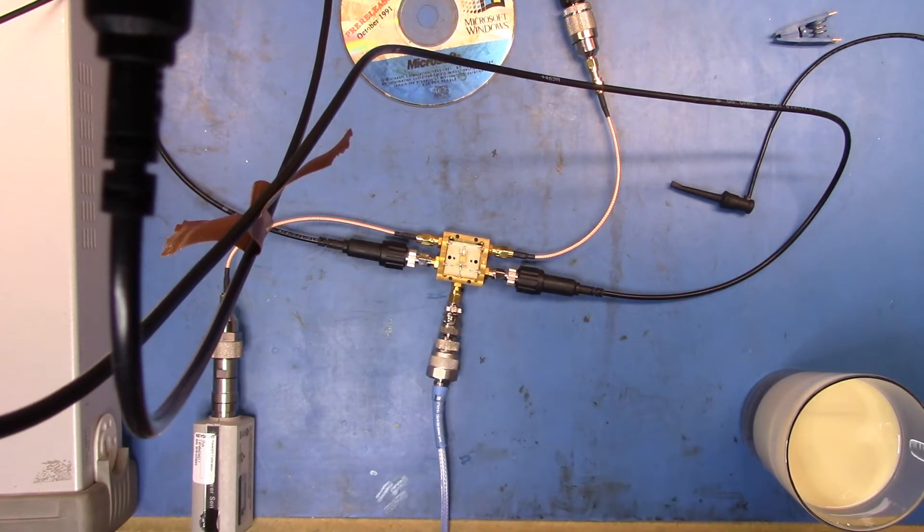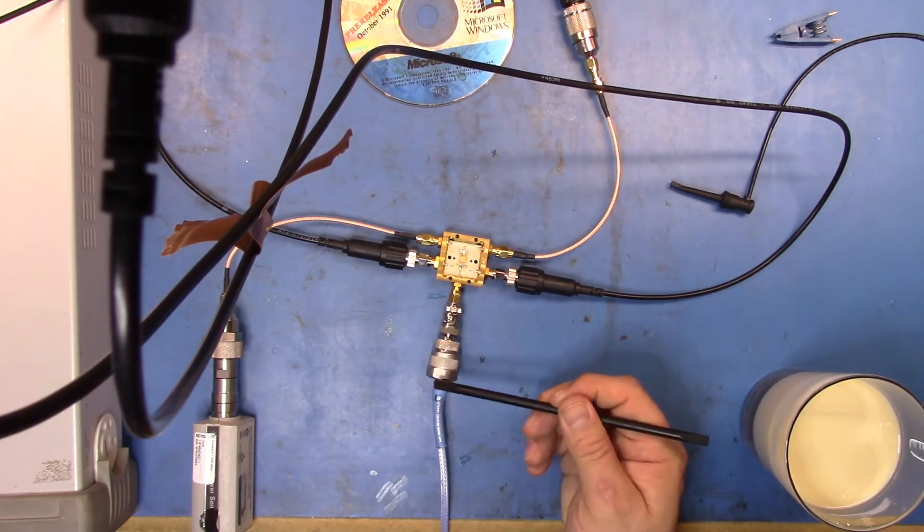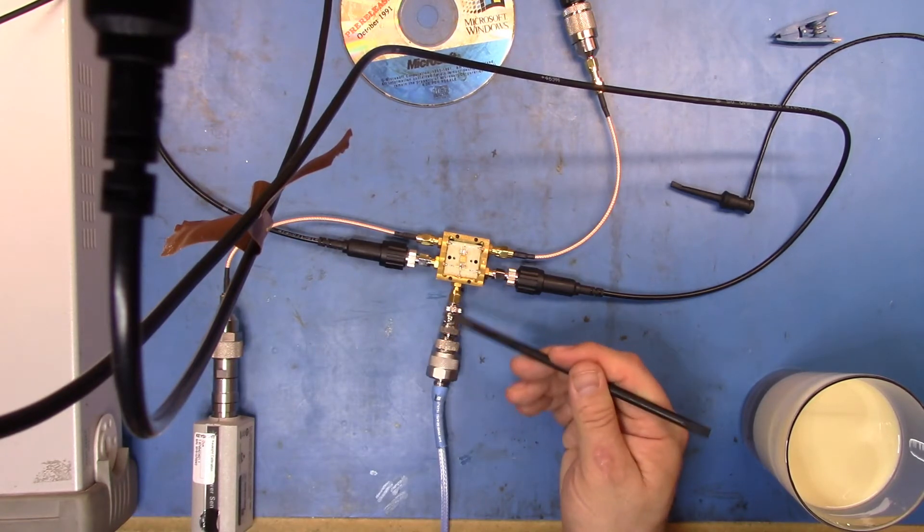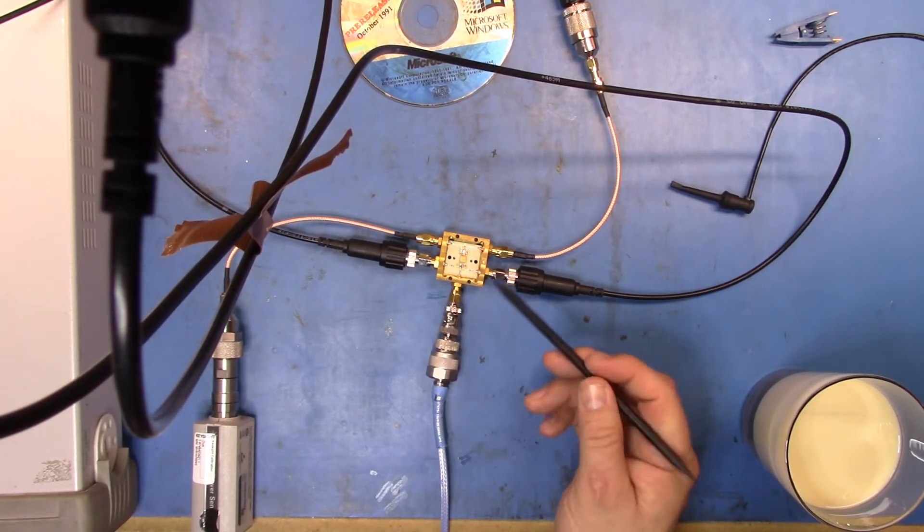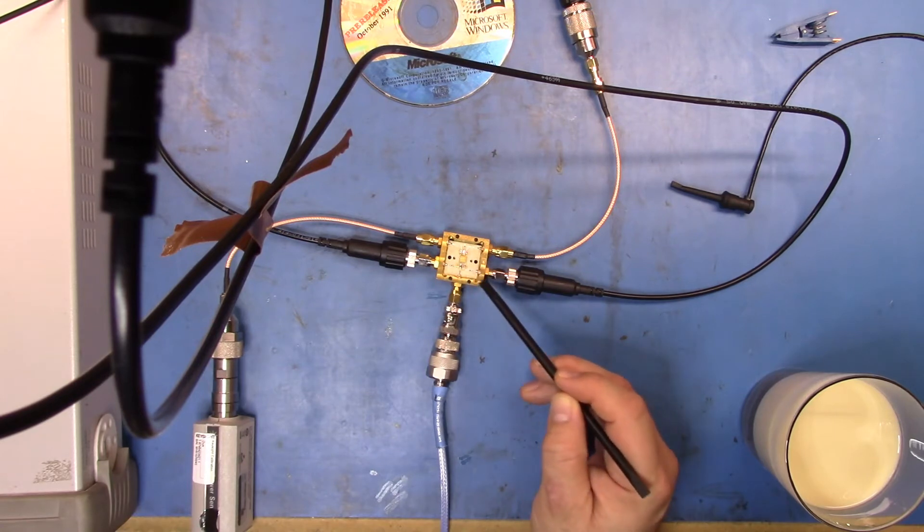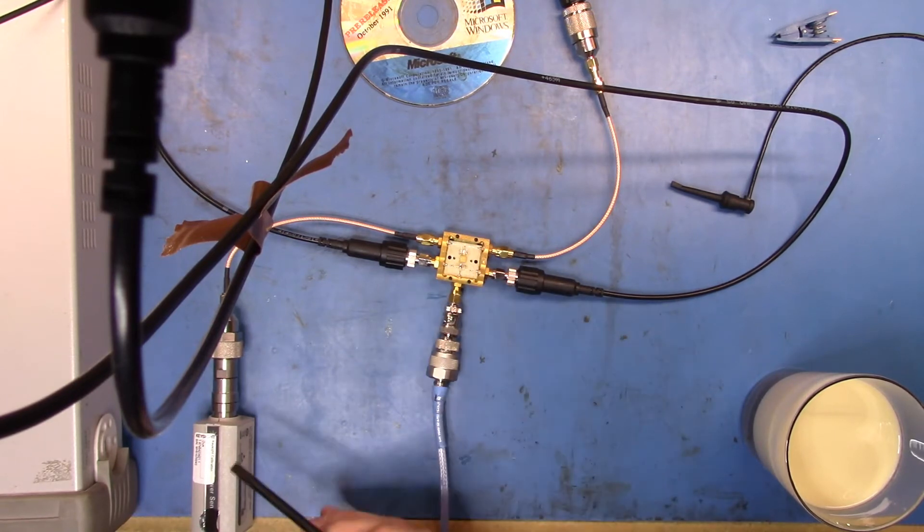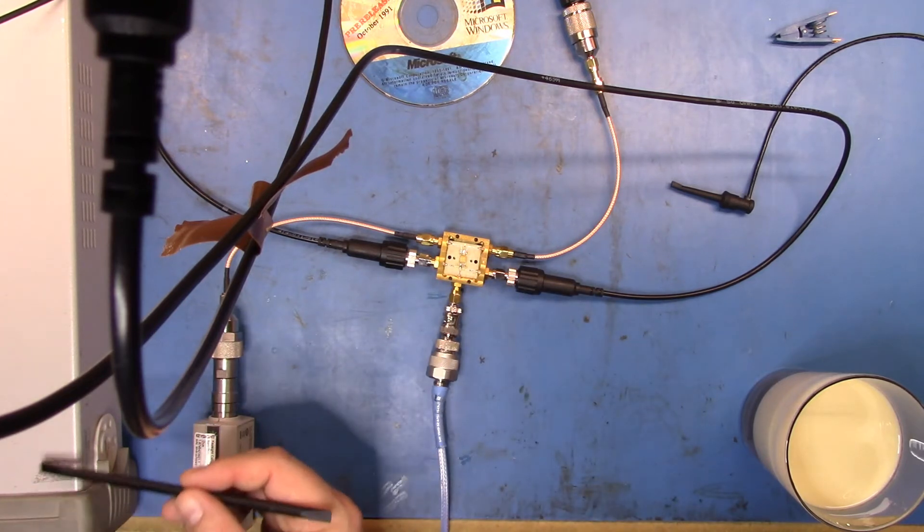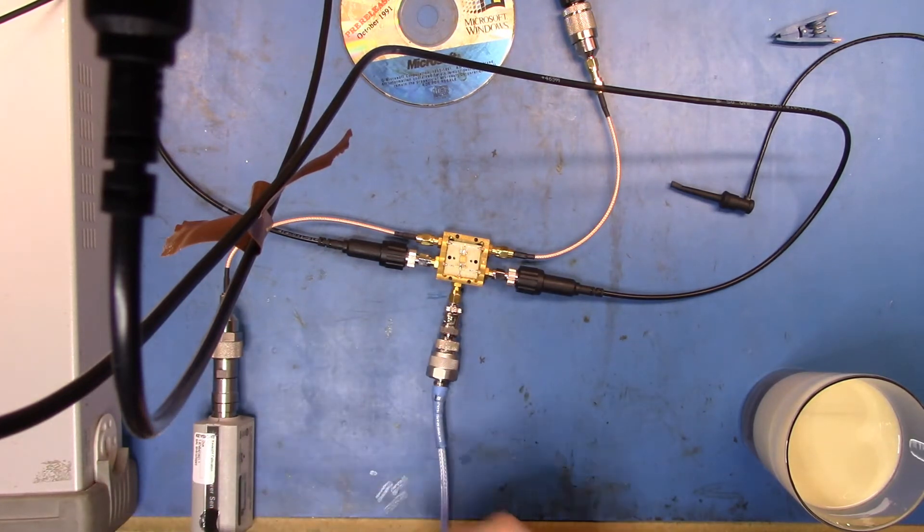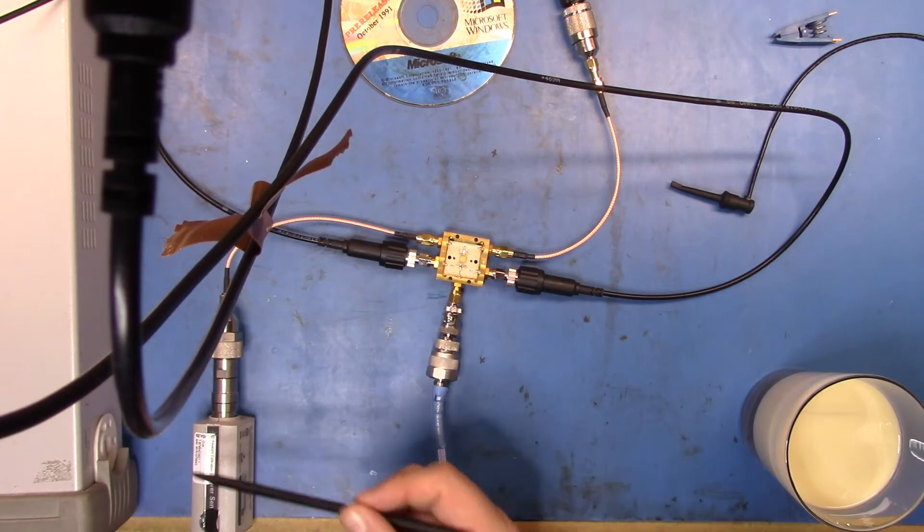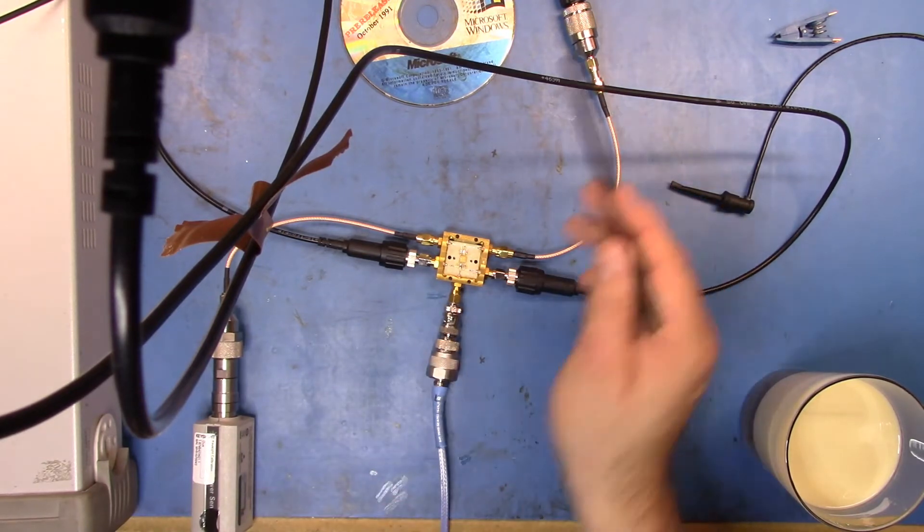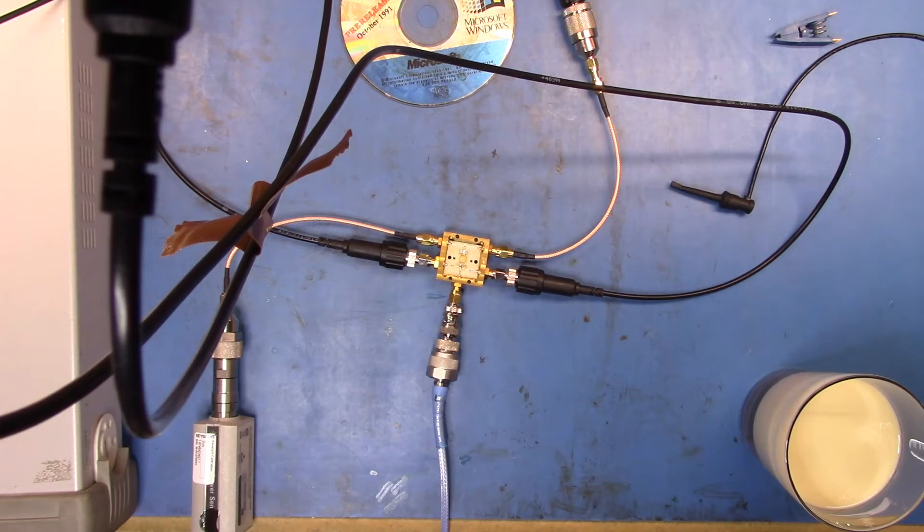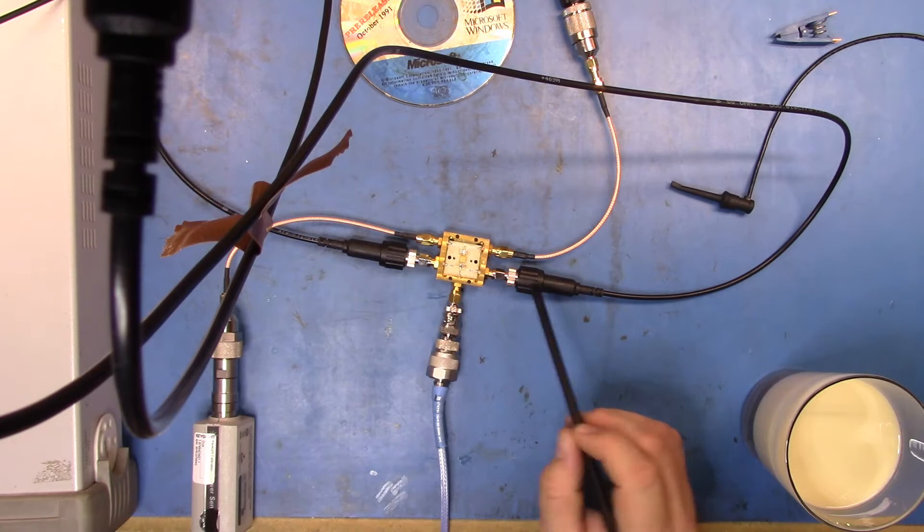What I have here is a 50 megahertz signal coming in from my 8657b, and then that's going in here and then it's going to be split on one channel. It's going, and on the other channel it's going to go to our oscilloscope.